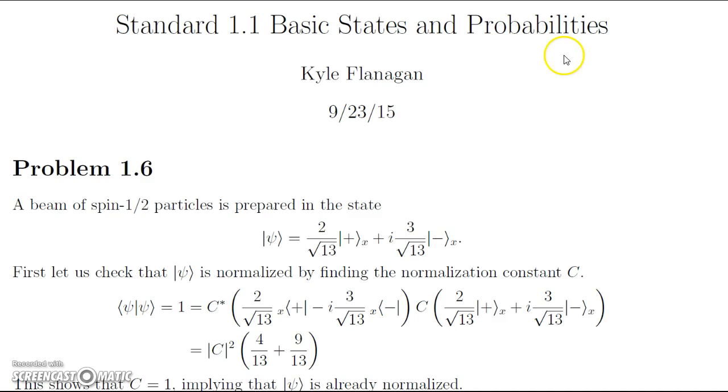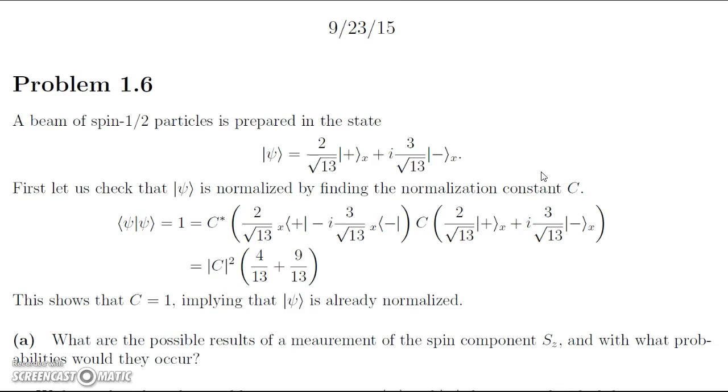We're doing problem 1.6, which starts off by stating a beam of spin 1/2 particles is prepared in the state psi equal to 2 over root 13 times the positive ket in the x direction, plus 3i over root 13 times the negative ket in the x direction. It's important to note here that the state is represented using the basis of the spin component in the x direction rather than the z direction. This will require a little bit more work when we're trying to find the probability as desired in the question.